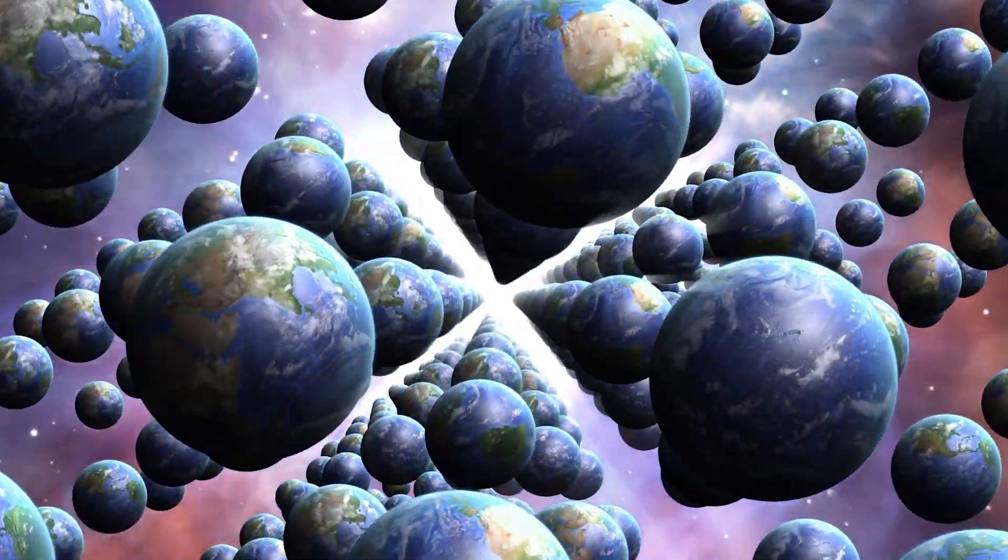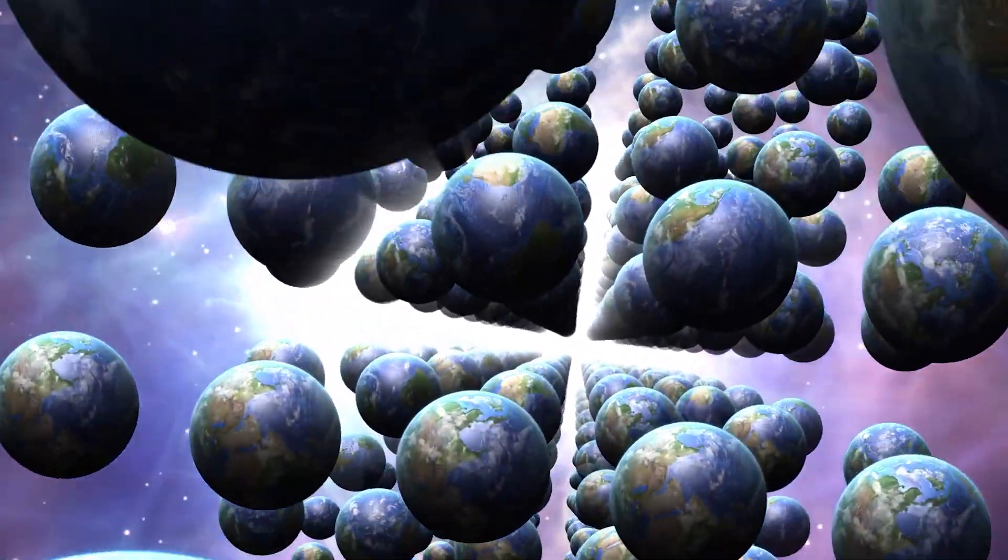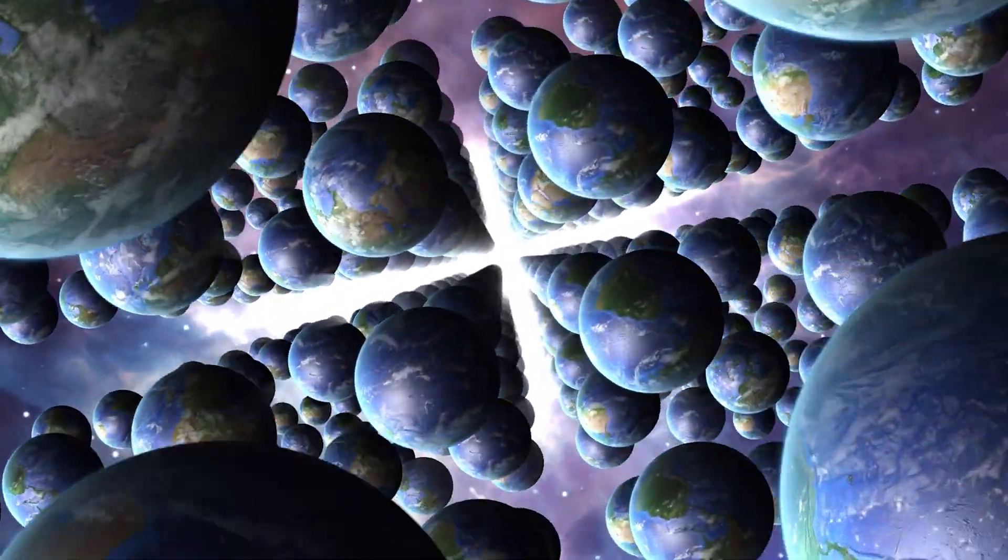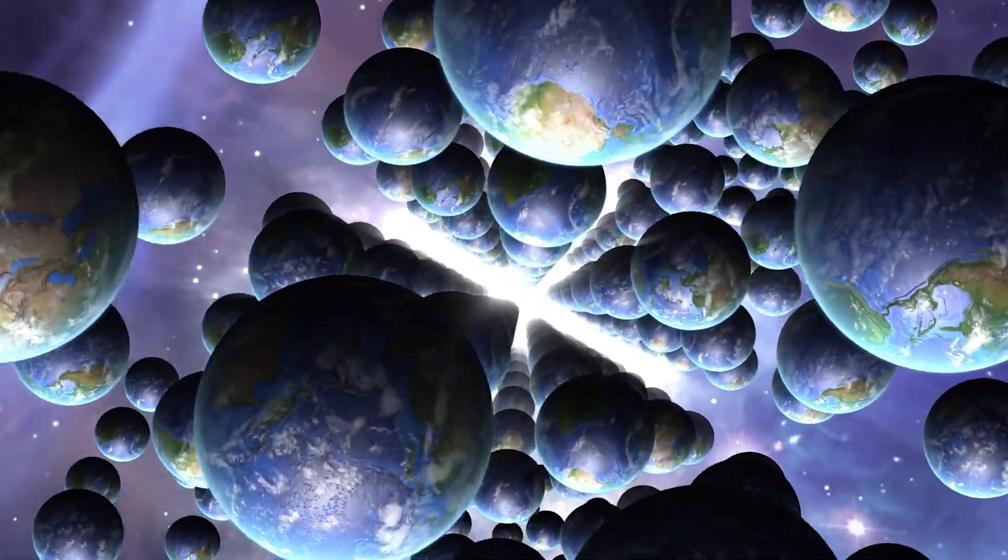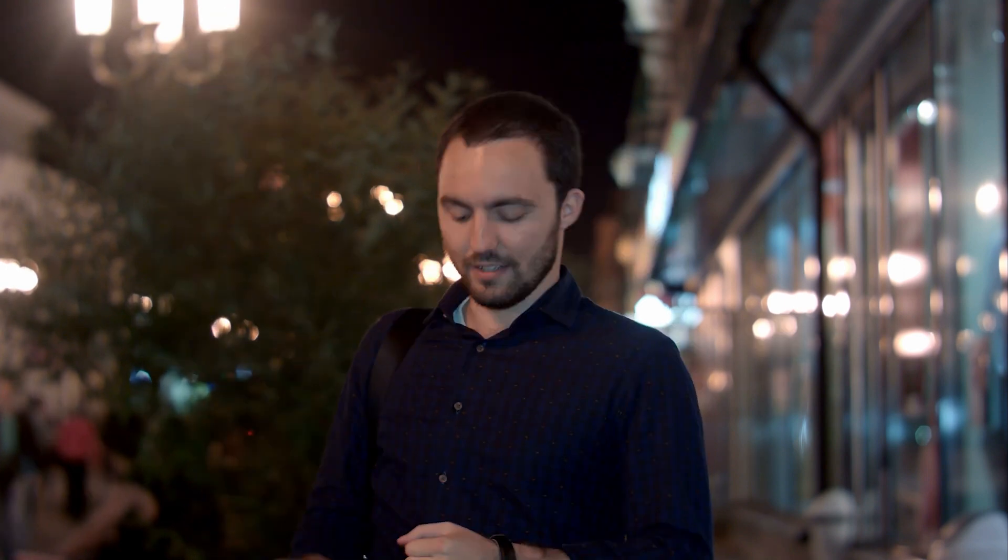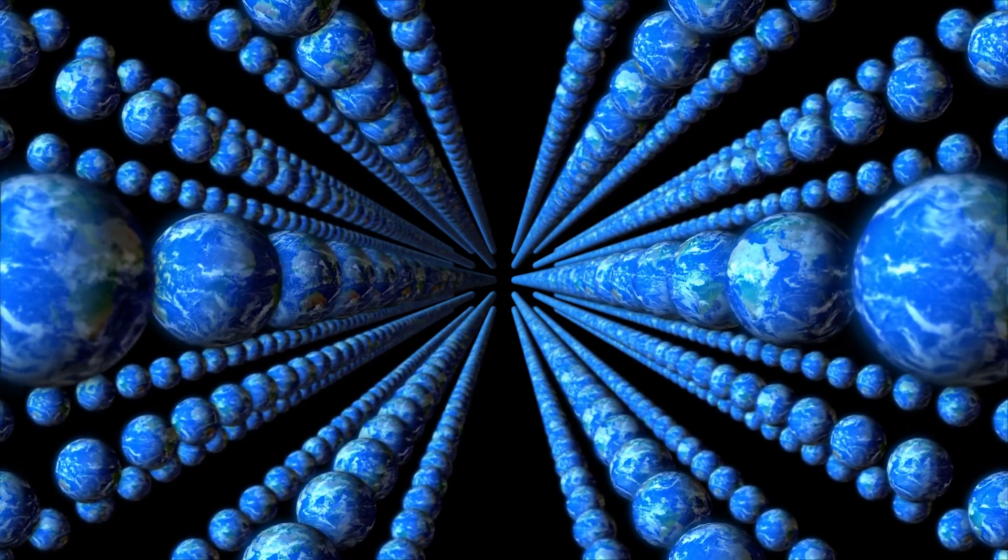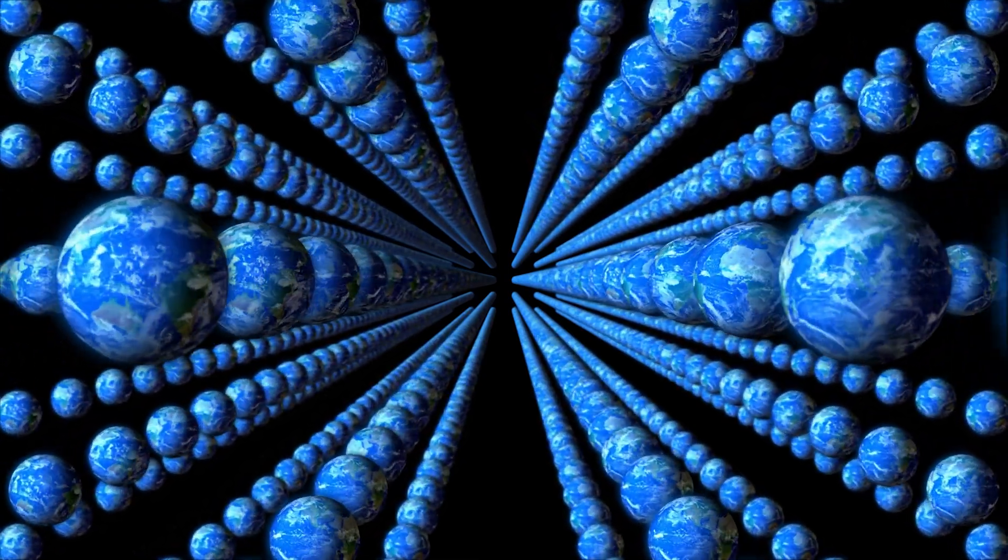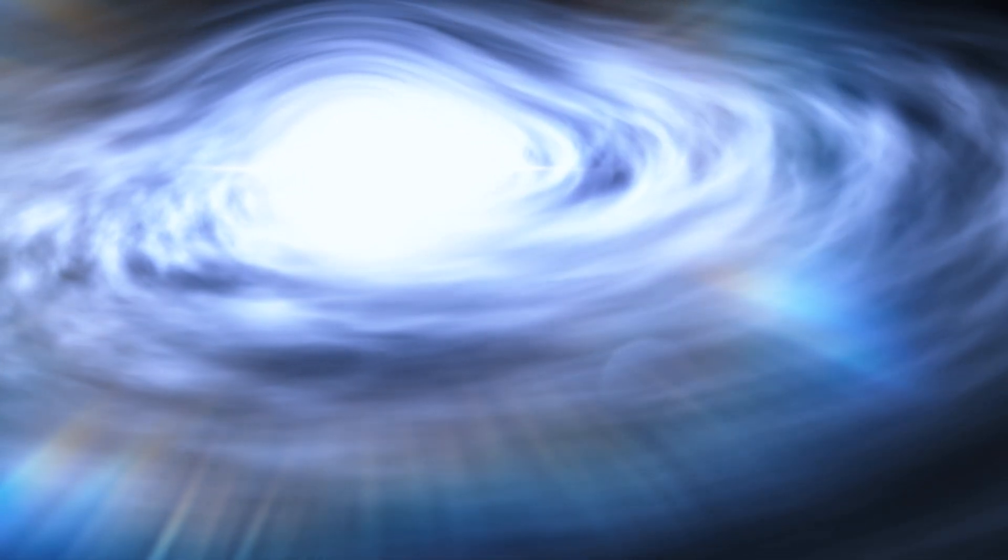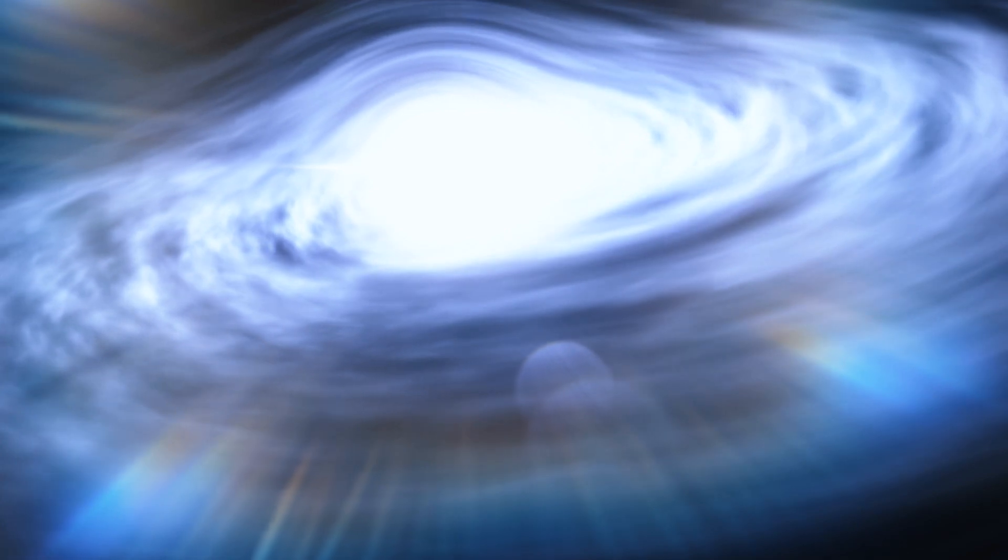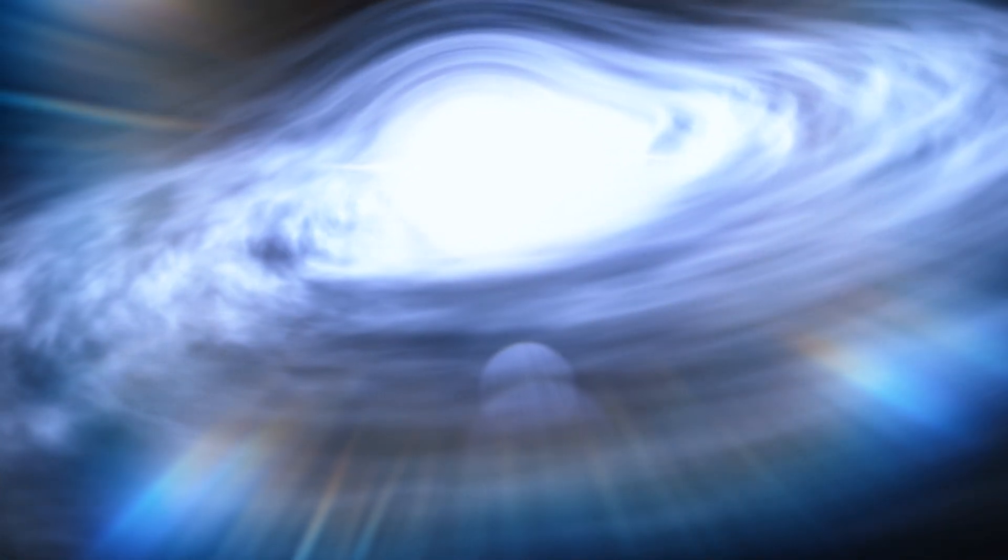According to the many-worlds theory, every time a quantum event occurs, the universe splits into a separate universe, each corresponding to a different possible outcome of that particular event. For example, if you were to flip a coin, the many-worlds theory suggests that in one universe, the coin will land on heads, and in another universe, it will land on tails. This would mean that there are an infinite number of parallel universes, each with its own sets of physical laws, energies, and properties of matter.